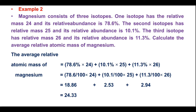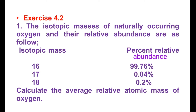18.86 plus 2.53 plus 2.94, so the average related atomic mass of magnesium is 24.33.